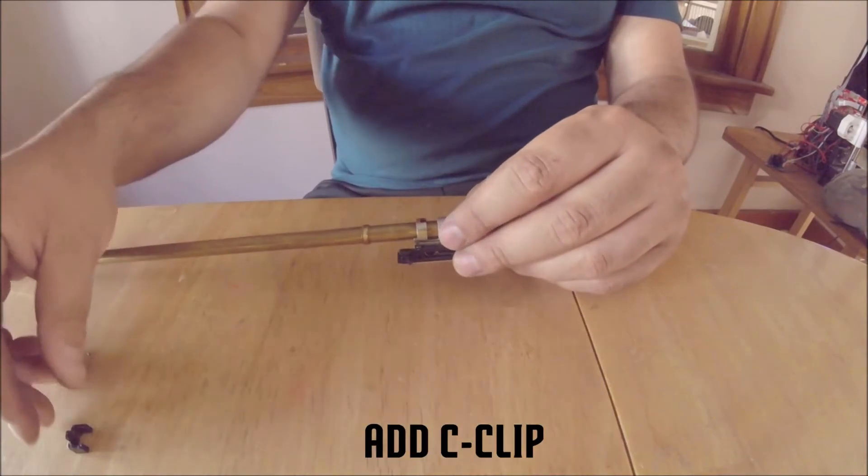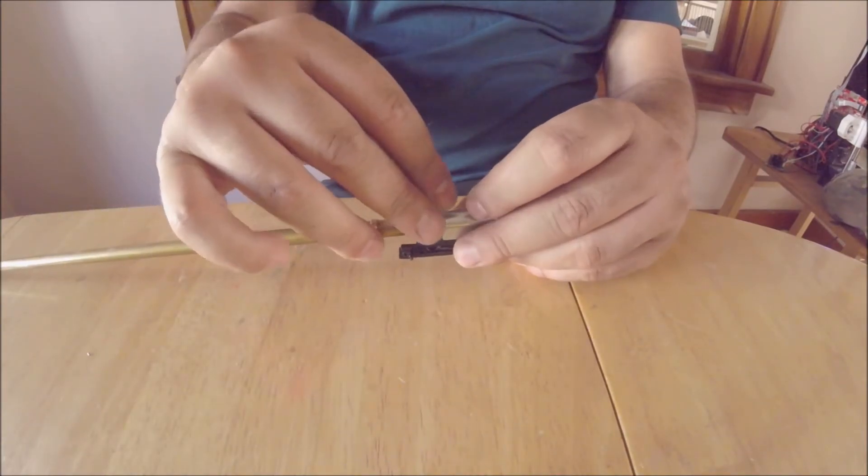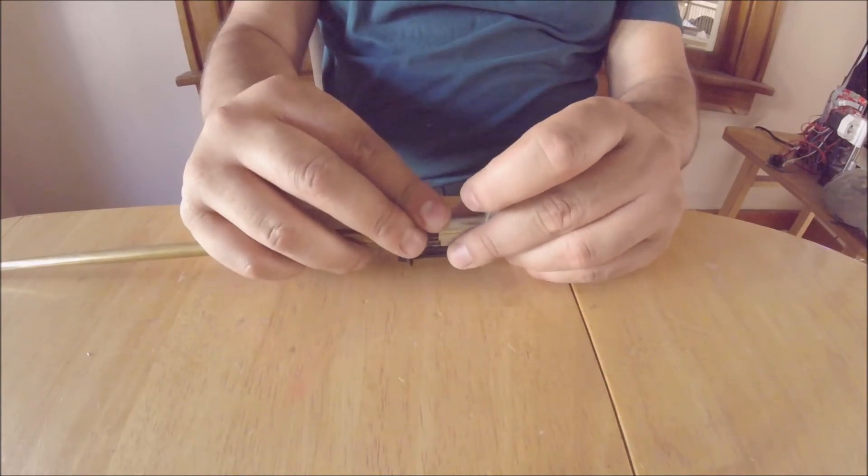Finally, add the C-clip to the hop unit to fix the barrel in place and slide over the hop ring to center the barrel.